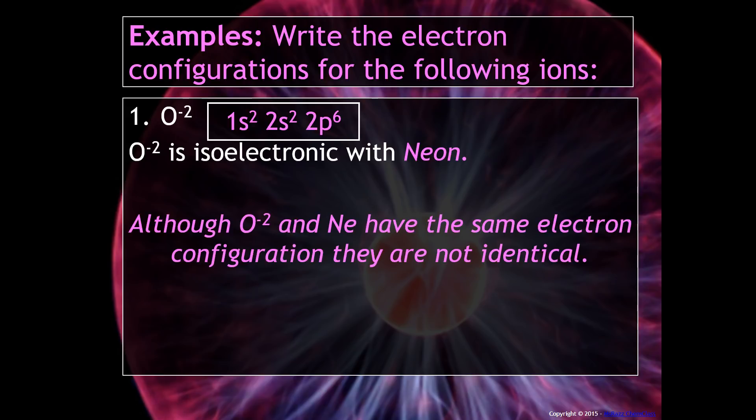A common mistake: just because two species have the same electron configuration doesn't mean they're the same element. They behave chemically similar, but they are not the same.